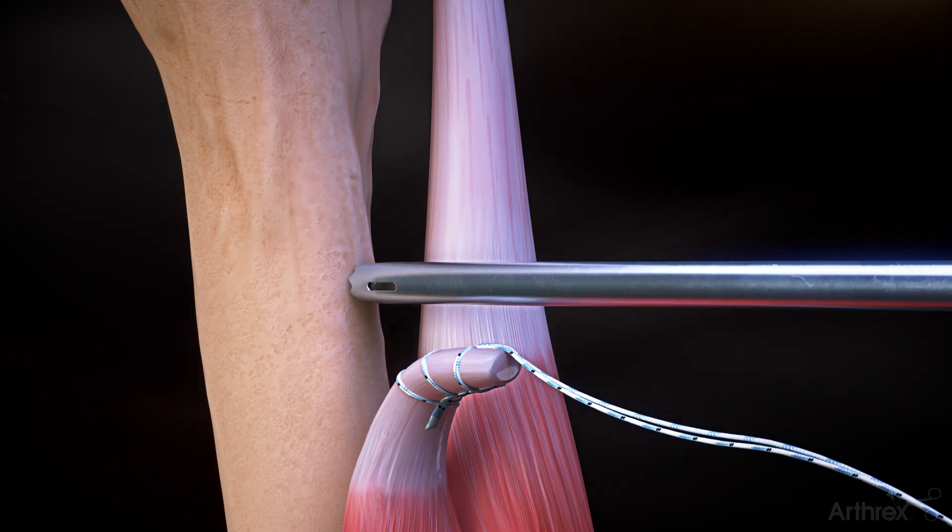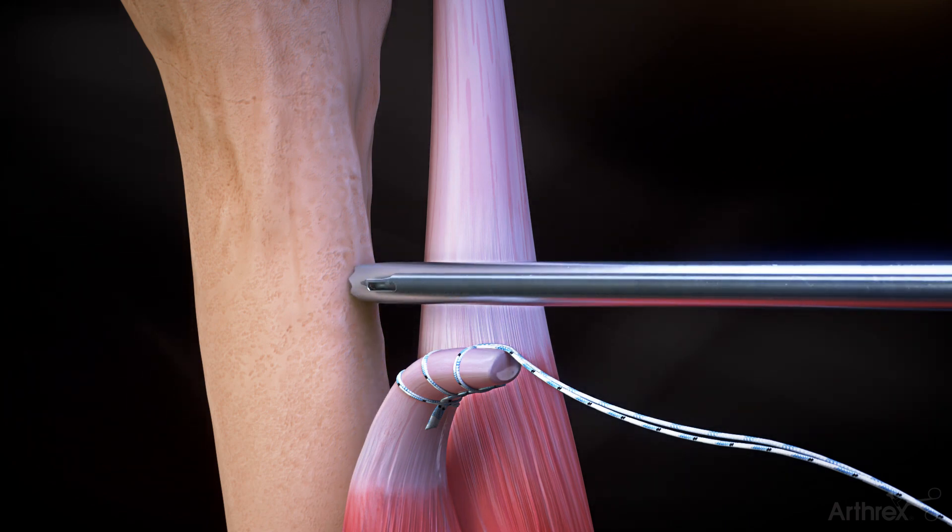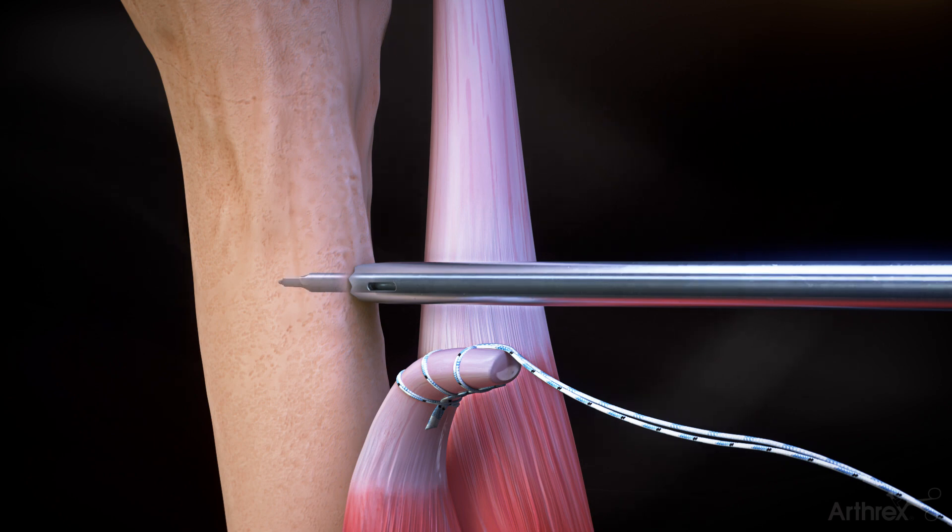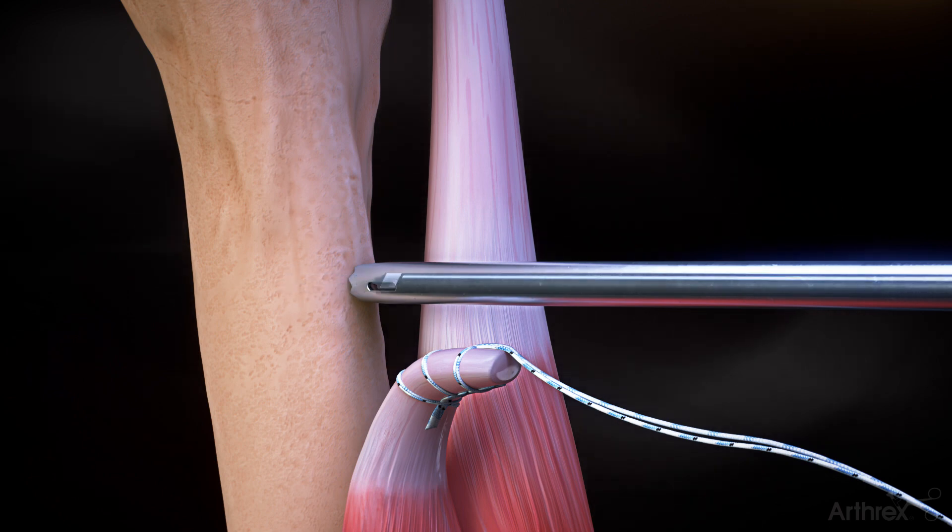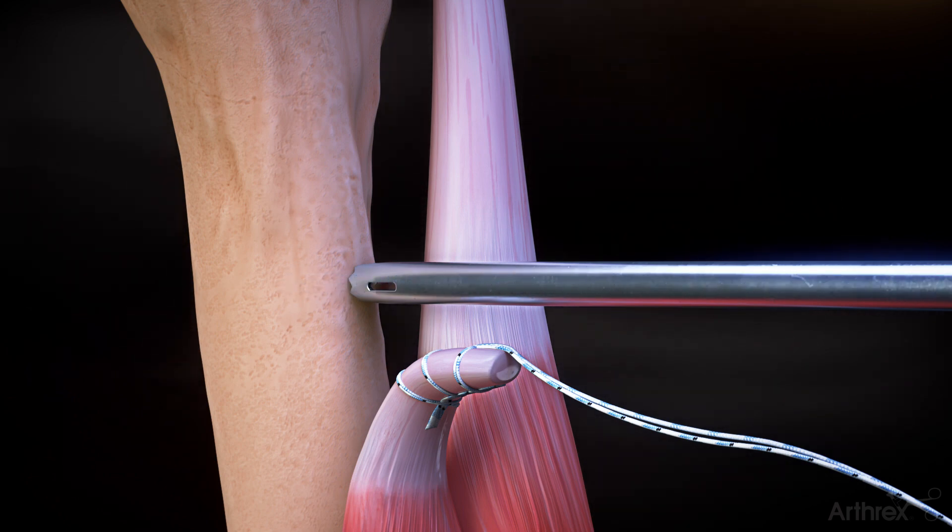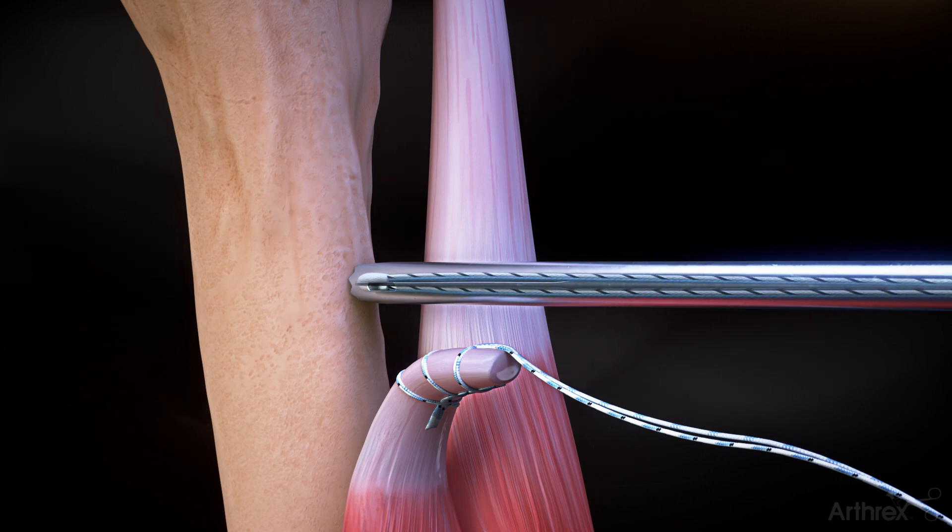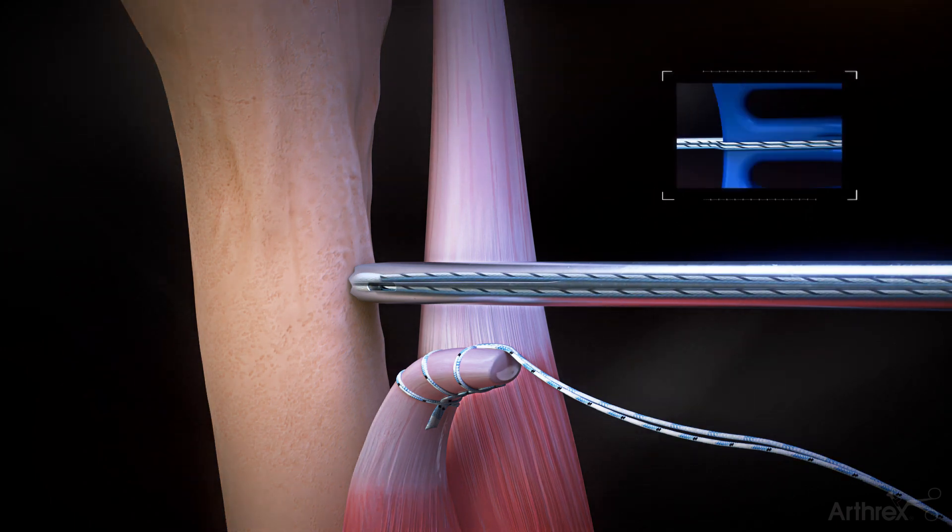Place the fiber-tack button drill guide at the desired location on the bony surface of the proximal humerus and drill a unicortical hole with a 2.6 mm spade tip drill. Keep the drill guide in place and insert the fiber-tack button through the guide.